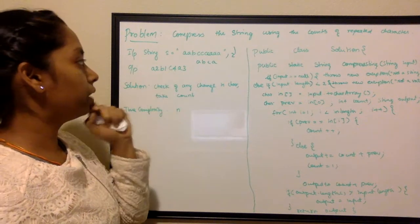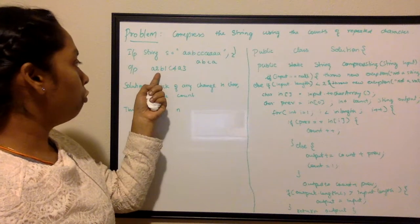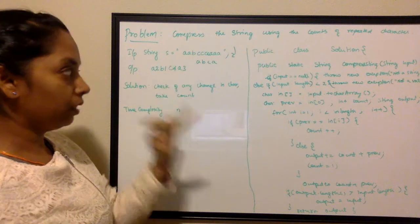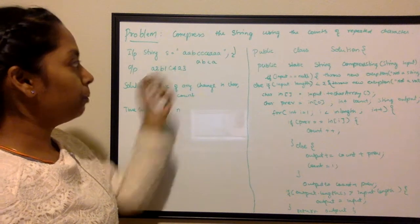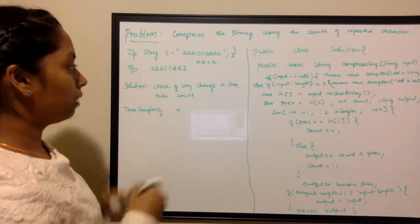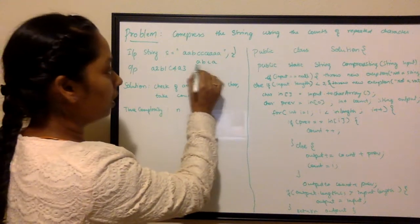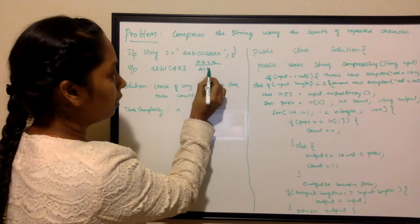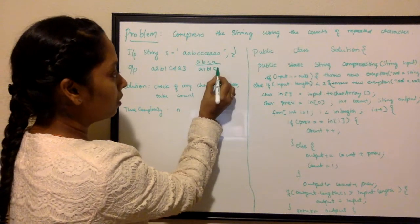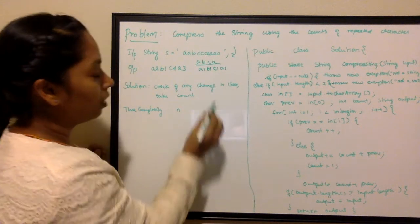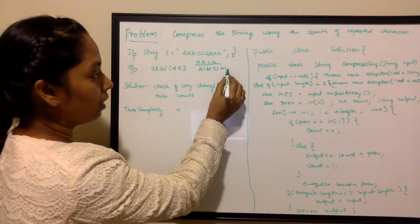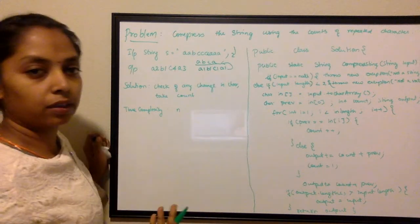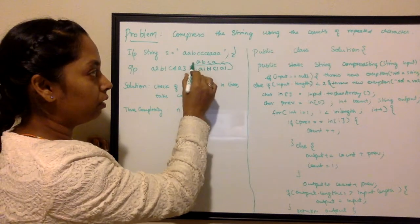If the output string is greater than the input string length, then return the input string length. For example, if this is an input, what would the compressed string be? Like 'a1 b1 c1 a1' — if you see, this compressed string's length is greater than the input string, so there is no point in compressing it, and you return the actual string.